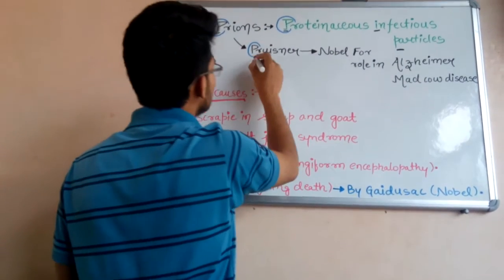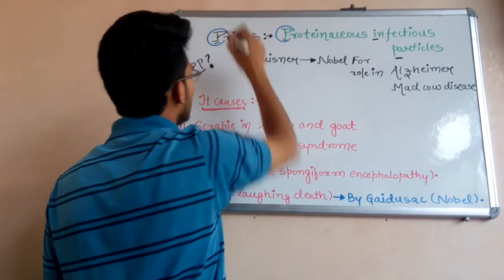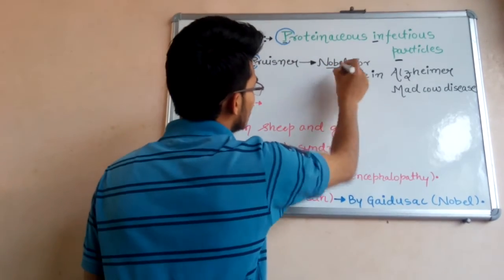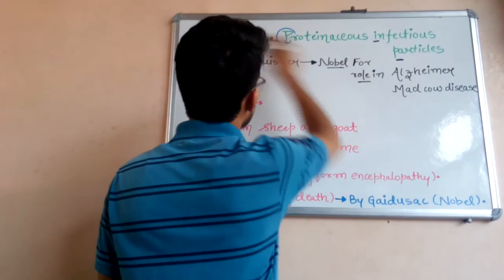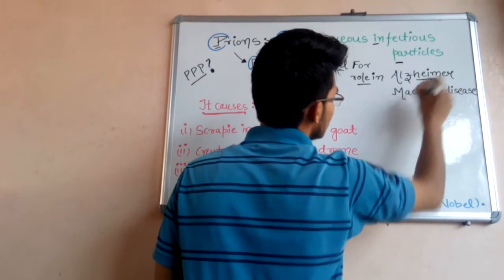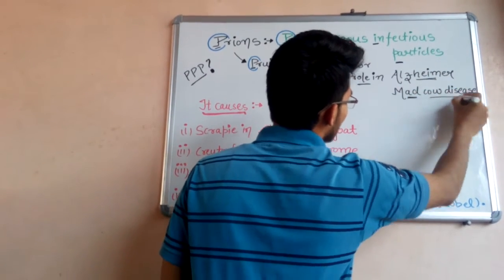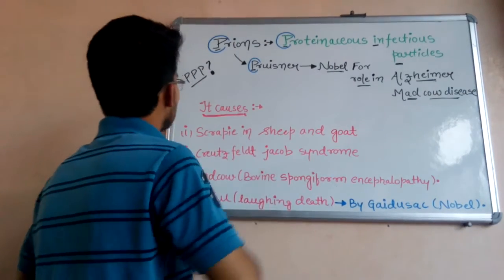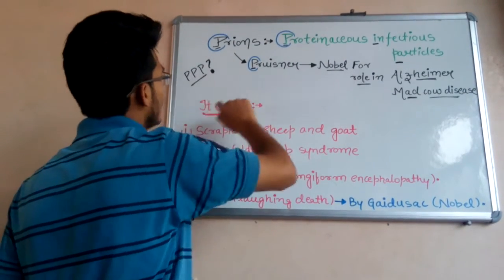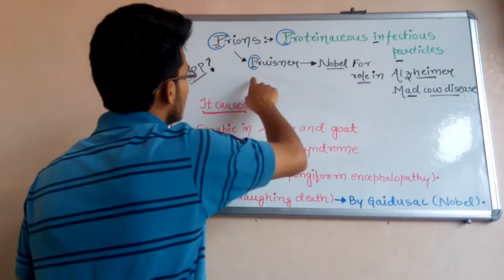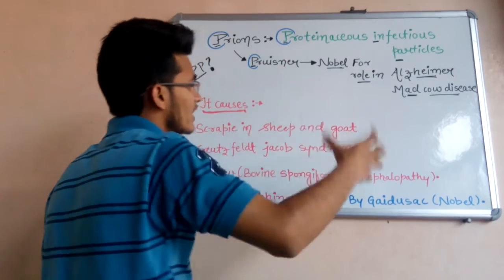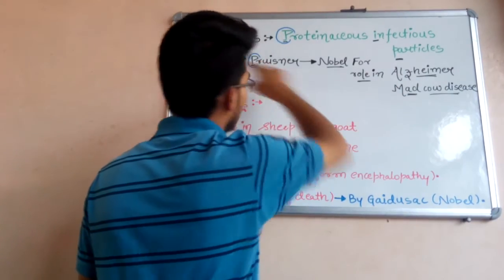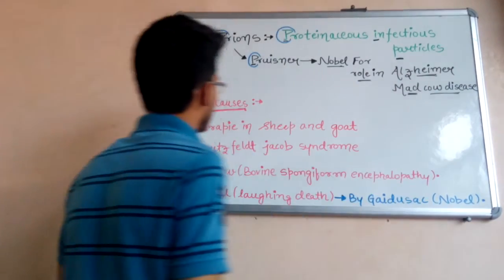Third P means Prusiner, who is the discoverer of prions. He was awarded with a Nobel Prize for giving significance to the role of prions in Alzheimer's disease and mad cow disease. So we have to remember triple P: prions, which are proteinaceous infectious particles, discovered by Prusiner who was awarded the Nobel Prize to identify the role of these prions in Alzheimer's and mad cow disease.